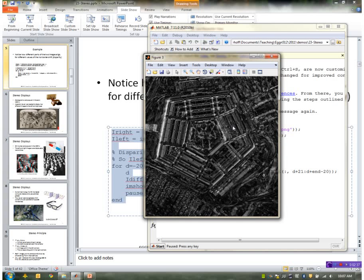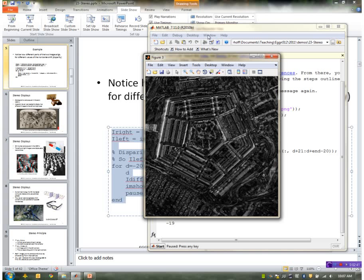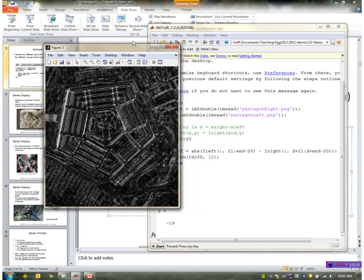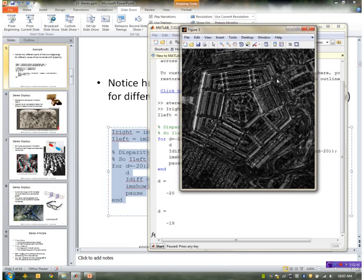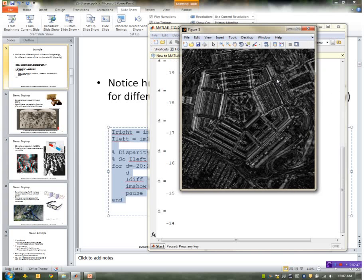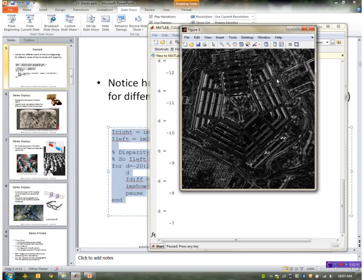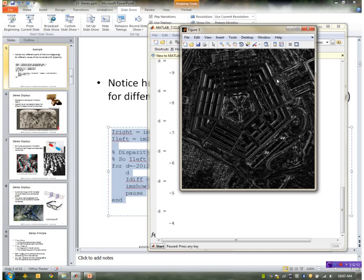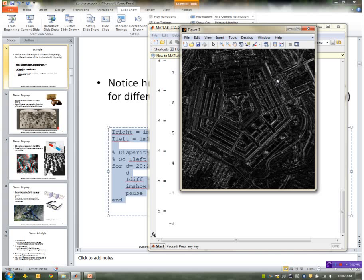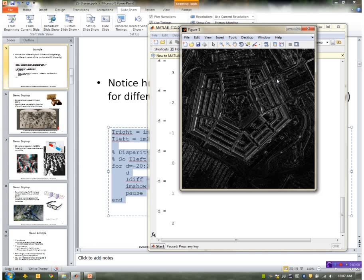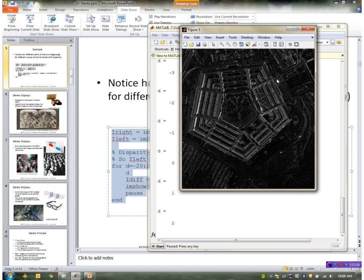the difference between the two at various shift levels. So as I increase the amount of shift, you can see that the black areas, ideally if they were identical, I'd get a black image or zero. So about this value of disparity of minus two, the building is almost aligned, and at this value of plus two, the background is almost aligned.